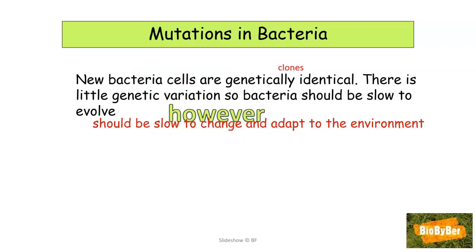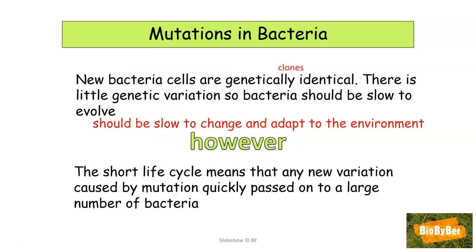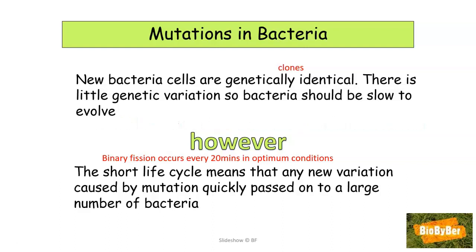While bacteria have little genetic variation, due to their very short life cycle — binary fission can occur every 20 minutes in optimum conditions — any mutation or change in the structure of the DNA can be quickly passed on to a large number of bacteria. After 20 minutes there will be 2 bacteria, then 4, then 8, then 16 bacterial cells all carrying that mutation — and you can imagine how many there will be after a number of hours.